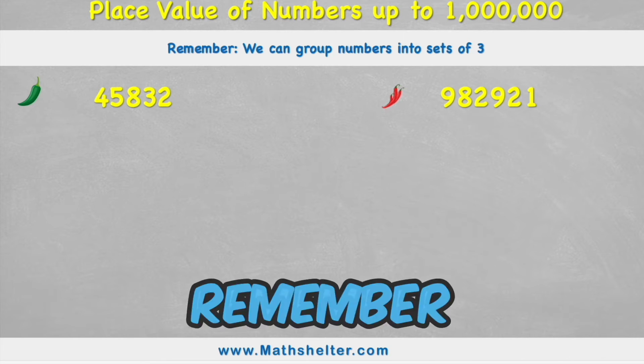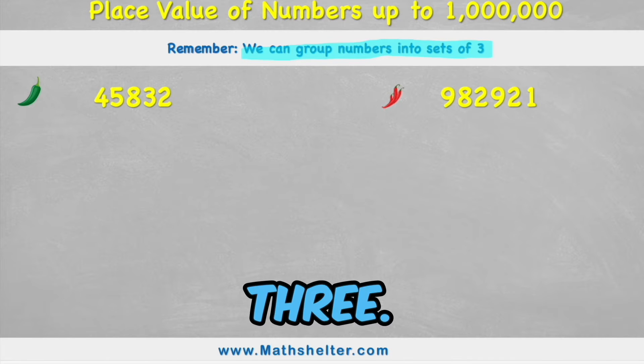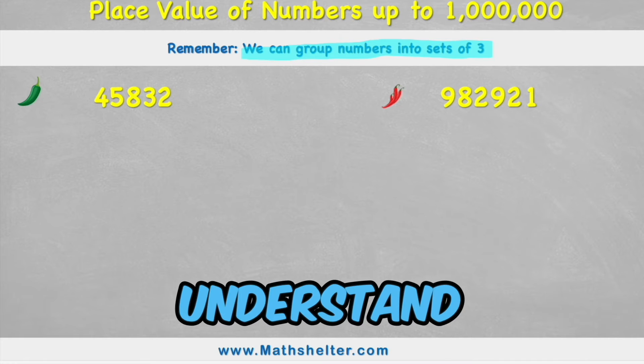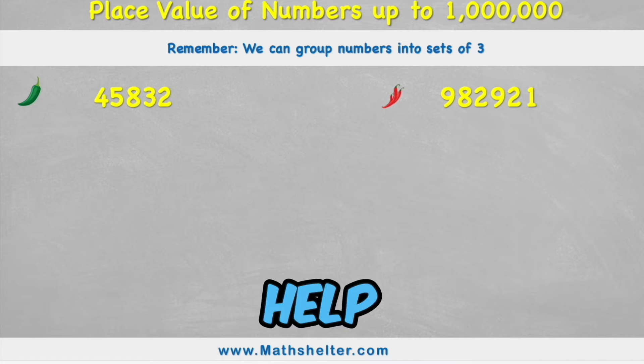The thing we're going to remember today is that we can group numbers into sets of three. That's going to really help us understand the place value of these numbers. And we're also going to use a place value chart to help us.